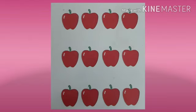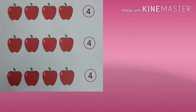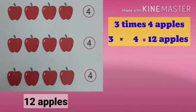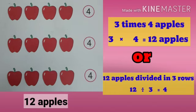See children here some apples are there. In each row we have 1, 2, 3, 4, 4 apples. So total 12 apples. So 3 times 4 apples means 3 into 4 equals to 12 apples. Or 12 apples divided in 3 rows gives 4 apples. So 12 divided by 3 equals to 4.